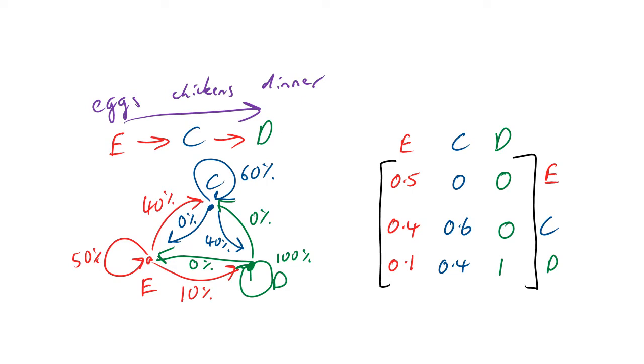There's a problem though: dead things don't become chickens and dead things don't become eggs. You can see that with these zeros we get over here. That's shown also on the diagram. 100% of the dead things stay dead. It's fascinating what you can find out with maths.